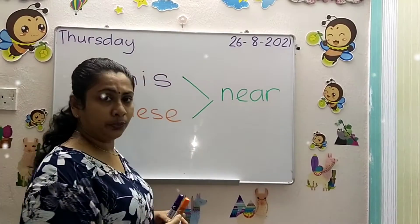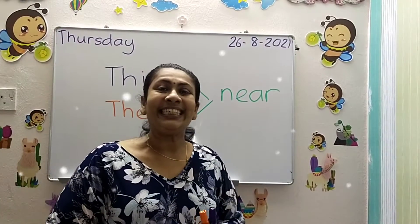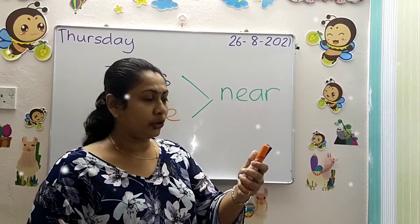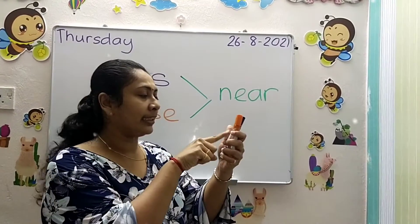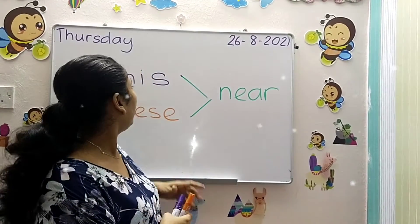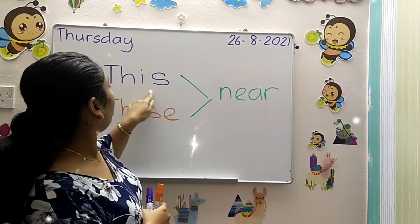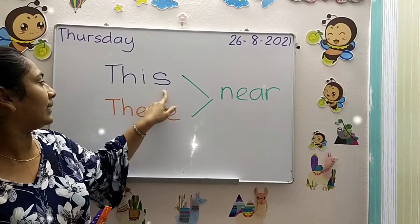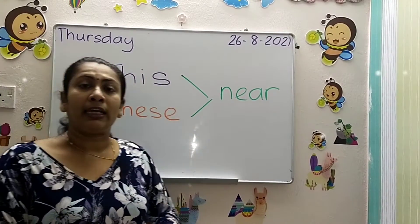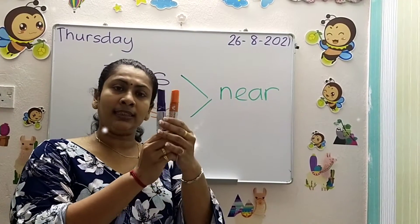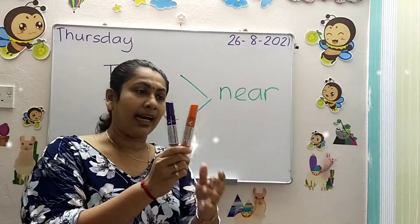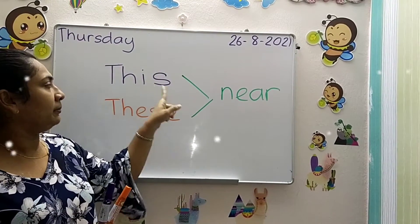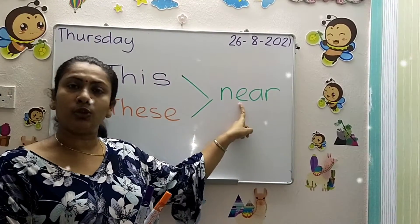Near to you — so you can touch the thing. Singular means one thing, so Teacher Shyam uses 'this.' If more than one thing, I use 'these.' And these two words are for items near to me.